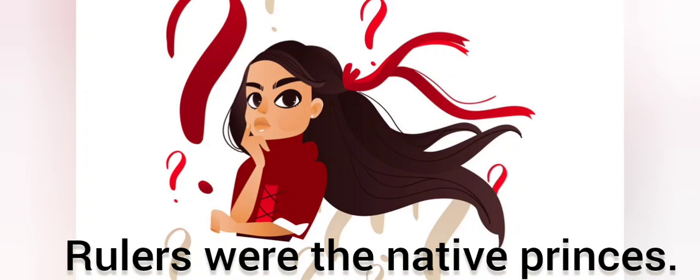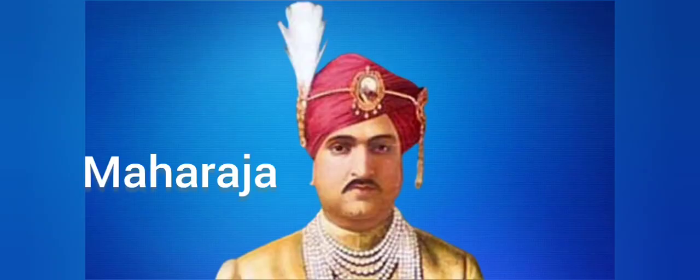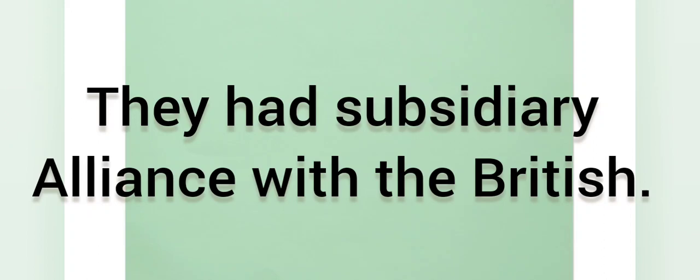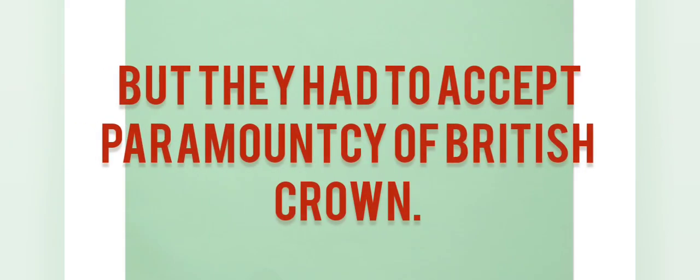Princely states were nominally sovereign entities of the British Indian Empire that were not directly governed by the British, but rather by a native ruler under a form of indirect rule. The native princes were the rulers of their areas. They had a subsidiary alliance with the British government and enjoyed a lot of internal control over their internal affairs. However, they had to accept British supremacy — that the British crown is supreme.